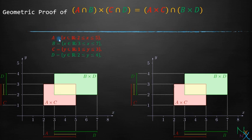Set A is equal to set of all x belongs to real number such that x is greater than or equal to 2 and less than or equal to 5. B is equal to set of all x belongs to real number such that x is greater than or equal to 3 and less than or equal to 7. C is equal to set of all y belongs to real number such that y is greater than or equal to 1 and less than or equal to 3. And D is equal to set of all y belongs to real number such that y is greater than or equal to 2 and less than or equal to 4.